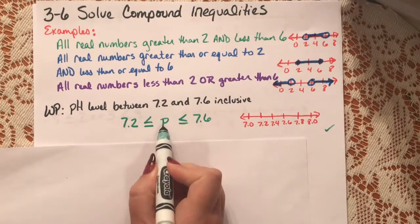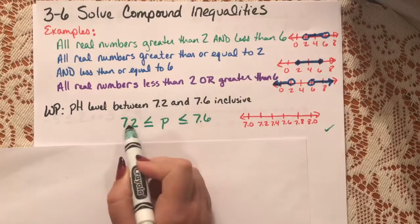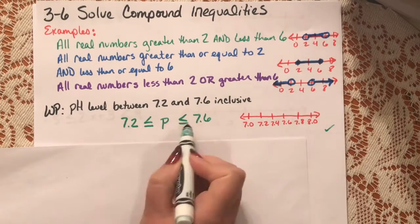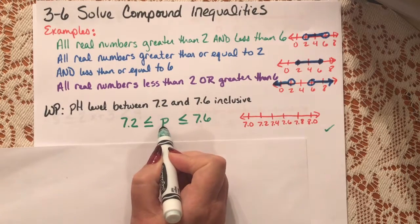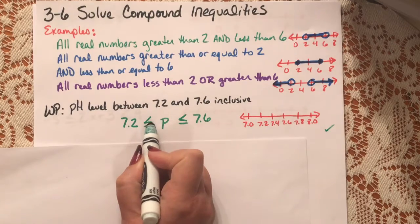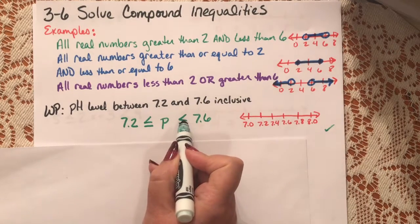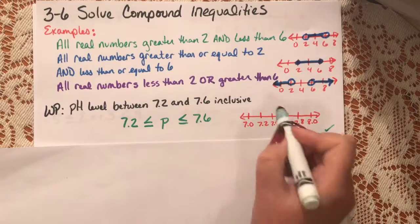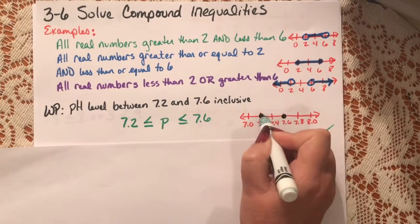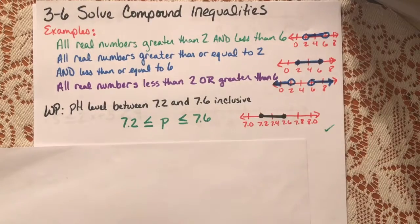You're going to be between 7.2 and 7.6 — 7.2 is going to be the least and 7.6 is going to be the greatest, and p, the pH level, is going to be in between them: greater than or equal to 7.2 and less than or equal to 7.6. When you graph that, it looks like that. Try checkpoint number one on page 205 right now — push pause and come right back.